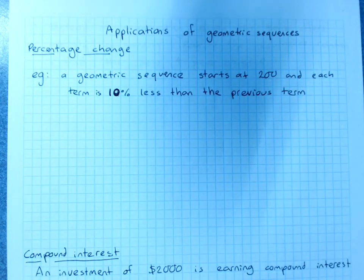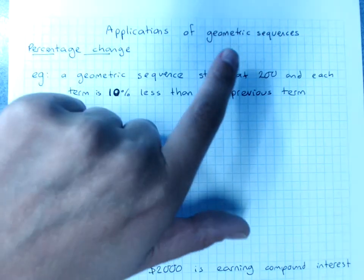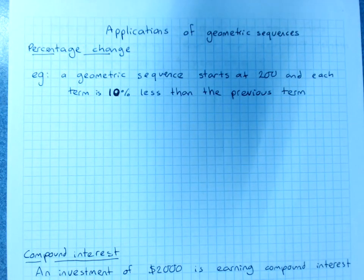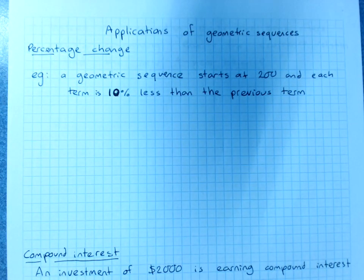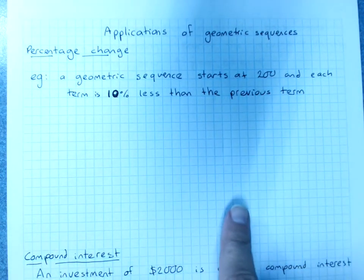Applications of geometric sequences. You'll remember a geometric sequence is where each term is multiplied by a common ratio to get the next term. Geometric sequences don't graph a straight line, they graph a curve, increasing or decreasing.